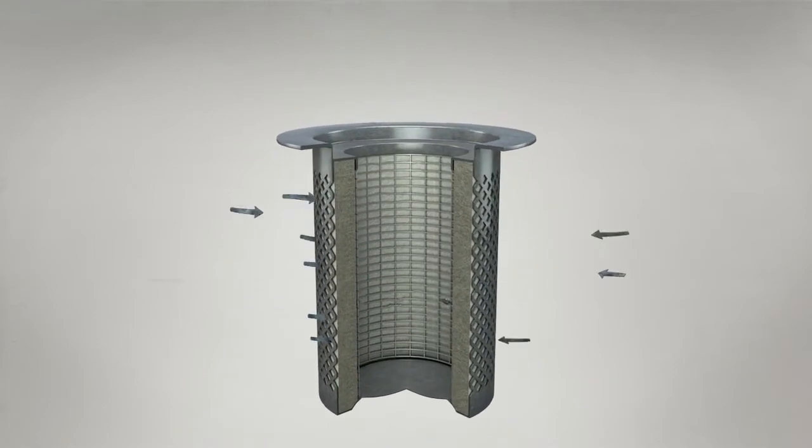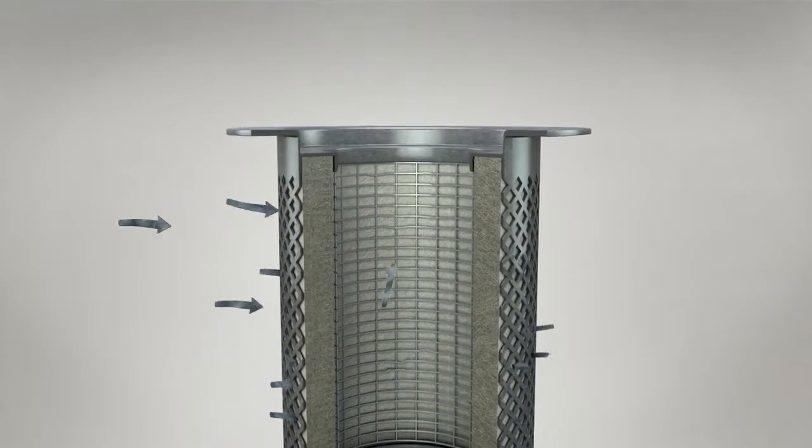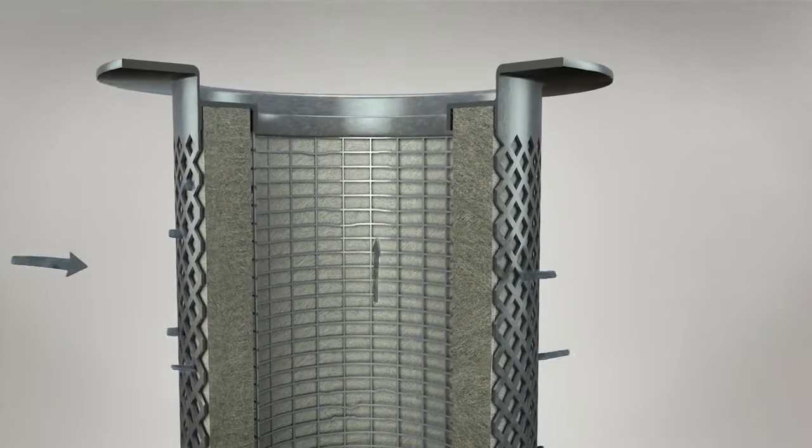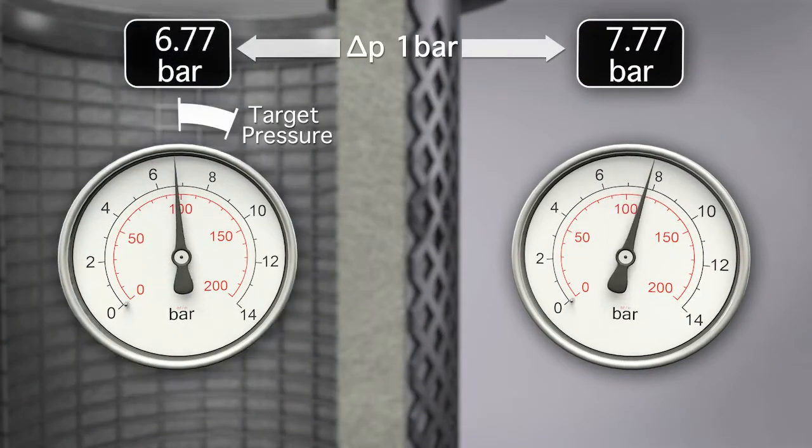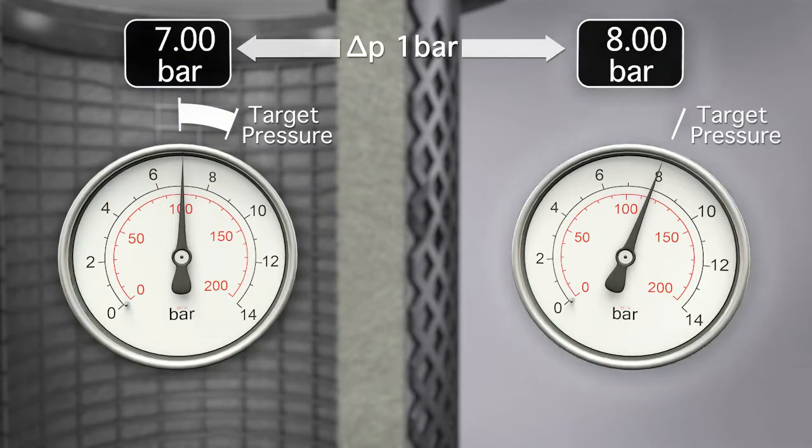Filtration media that is too dense will restrict airflow, creating an increased pressure differential across the element. Consequently, the compressor will continue to think its target pressure hasn't been reached, when in fact it has.